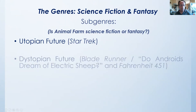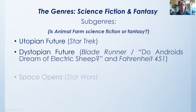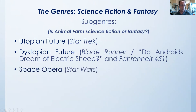A utopian future might be represented by the TV show Star Trek, where there are problems, but a lot of the problems we have in today's society like pollution and overcrowding have been solved. There are plenty of dystopian stories like Blade Runner, which originally was a story called Do Androids Dream of Electric Sheep by Philip K. Dick. There's also Fahrenheit 451 by Ray Bradbury, and of course Animal Farm can be classified as a dystopia.